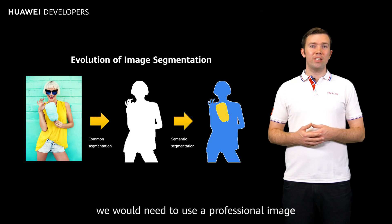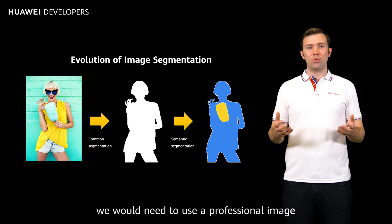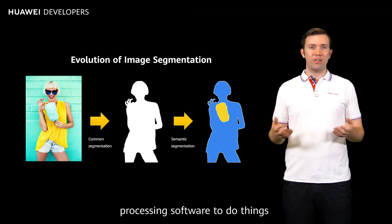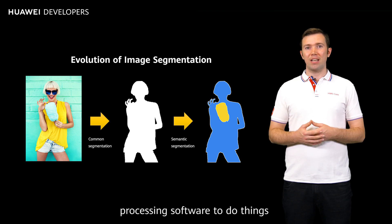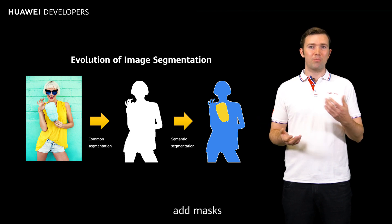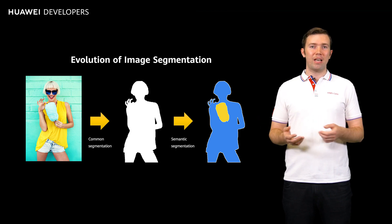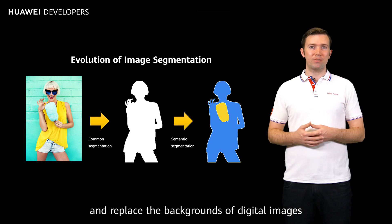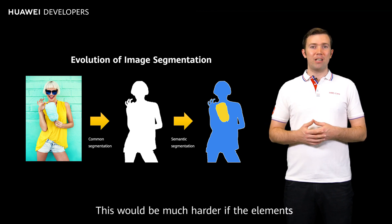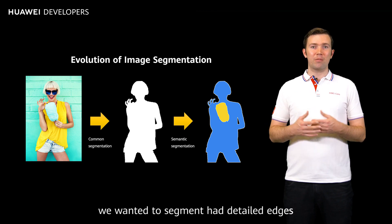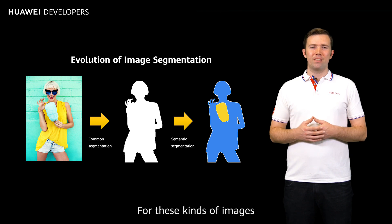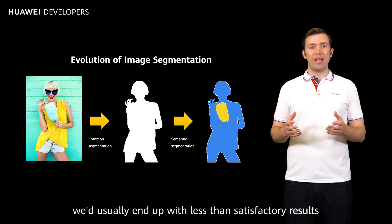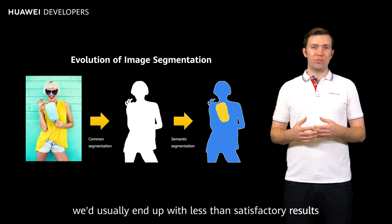Traditionally, we would need to use professional image processing software to do things like cut out figures, add masks, and replace the backgrounds of digital images. This would be much harder if the elements we wanted to segment had detailed edges. For these kinds of images, we'd usually end up with less than satisfactory results.